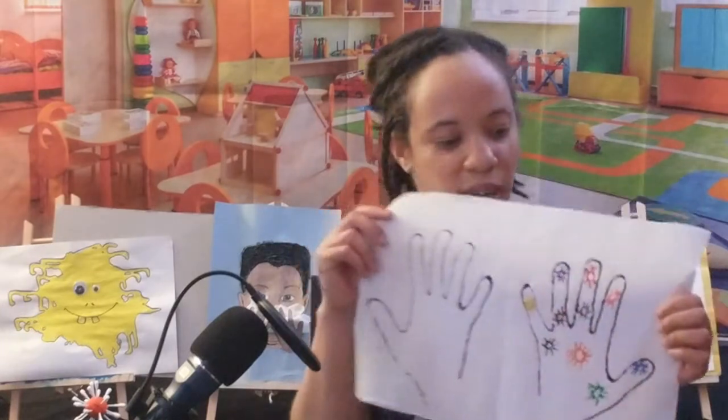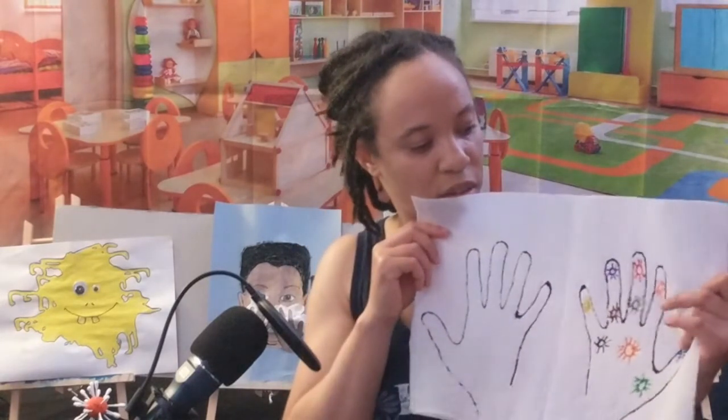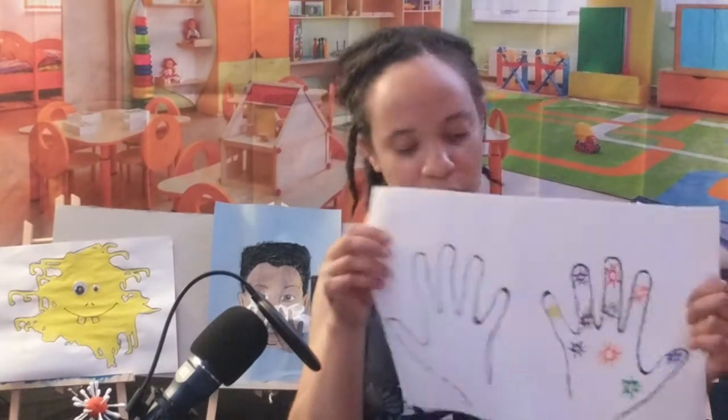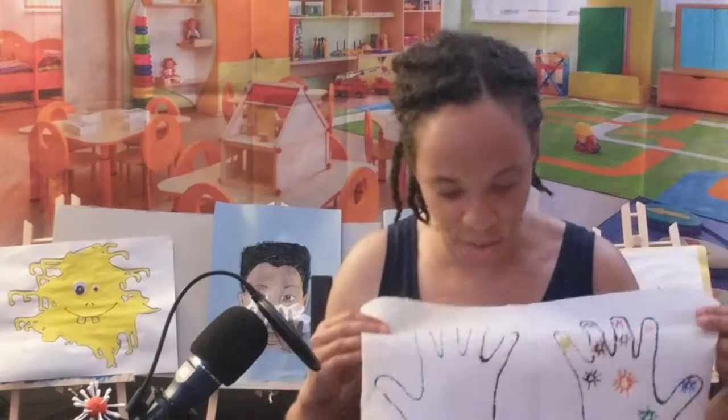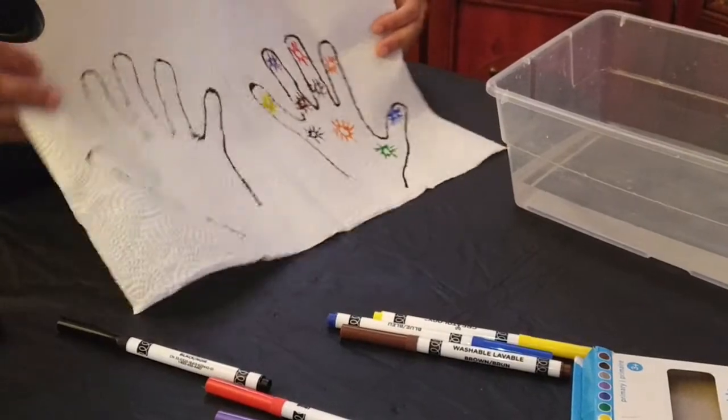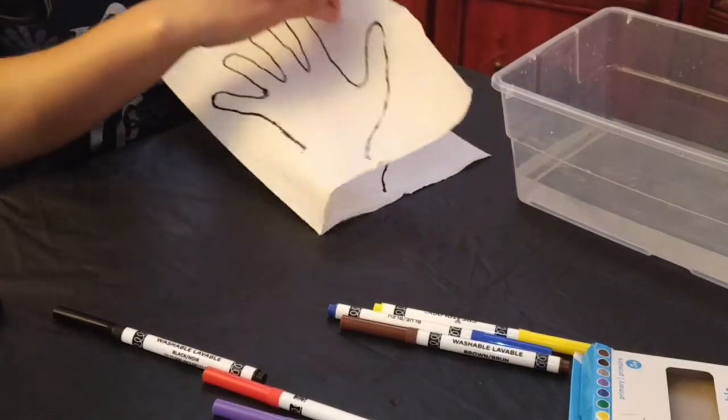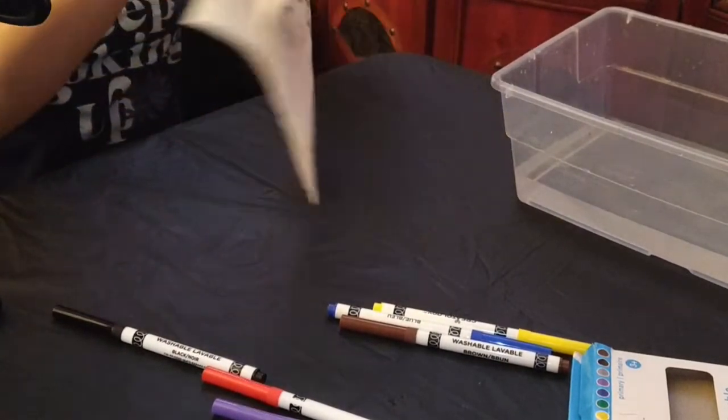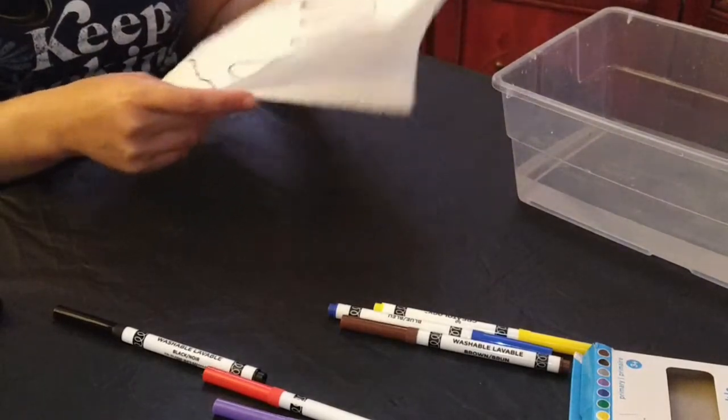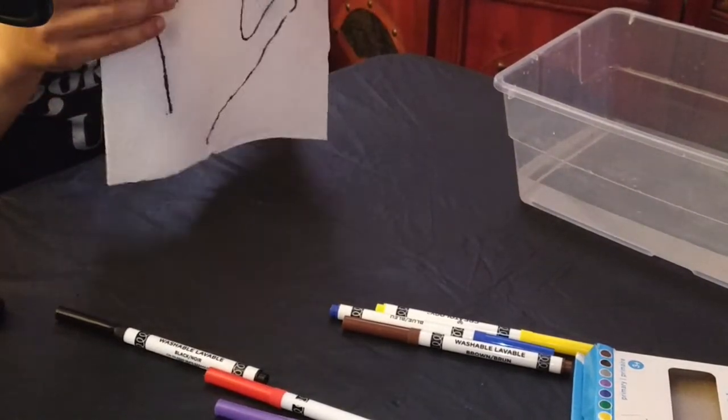So I have this side. I drew my germs. This side, I don't have anything. So this side, germs. This side, I don't have anything. And then I'm going to close it like that. Now, I have it like this.